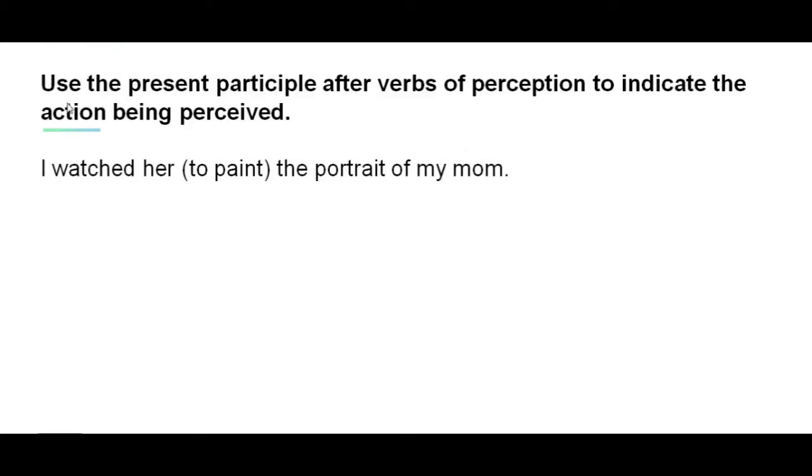Remember that we use the present participle after verbs of perception to indicate the action being perceived. Now read the following sentence and provide the present participle form of the verb in the bracket. I watched her to paint the portrait of my mom. I watched her painting the portrait of my mom.